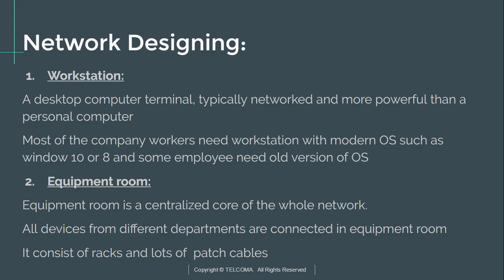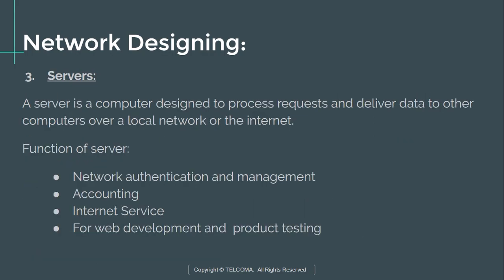The equipment room is the centralized core of the whole network. All devices from different departments are connected to this equipment room, and it consists of various racks and patch cables. A server is a computer designed to process requests and deliver data to other computers over a local network or the internet. The functions of a server include network authentication, management, accounting, internet services, web development, and product testing.